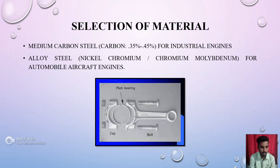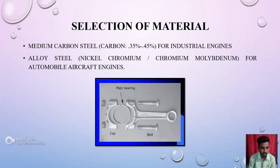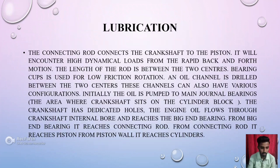Selection of material for the connecting rod: Medium carbon steel with carbon content of 35% to 45% is used for industrial engines. Alloy steel such as nickel-chromium or chromium-molybdenum is used for automobile and aircraft engines.